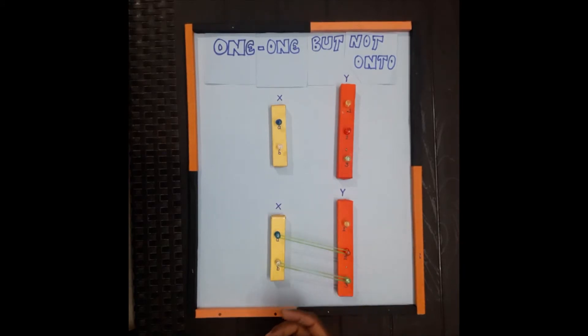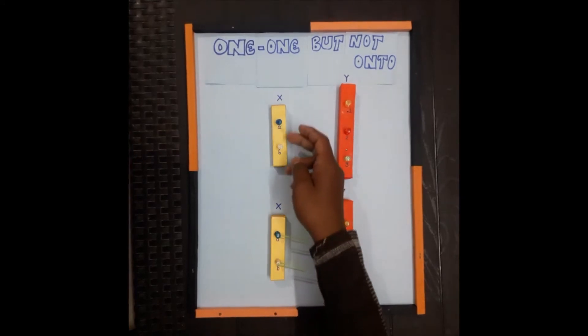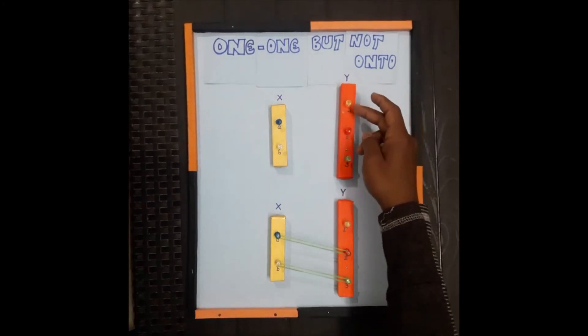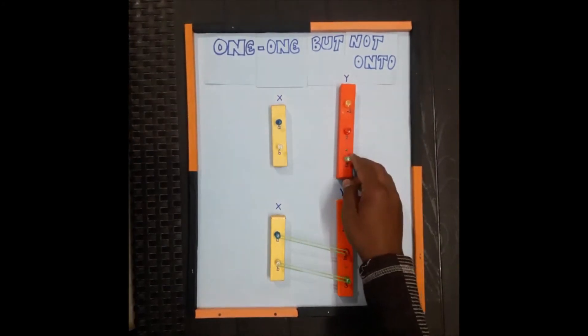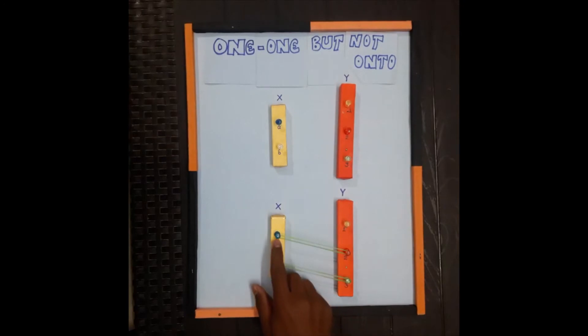Here in x there are two elements a and b, and in y there are three elements 1, 2, and 3. Here I have joined the element a to element 2 of y, and element b to element 3 of y.